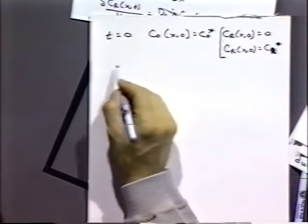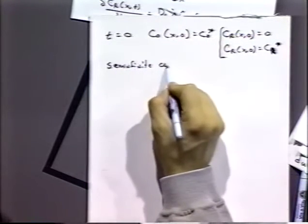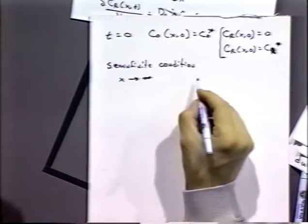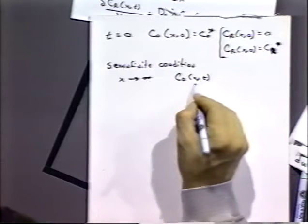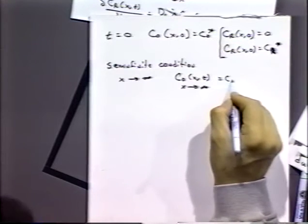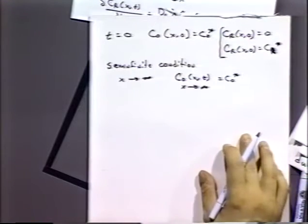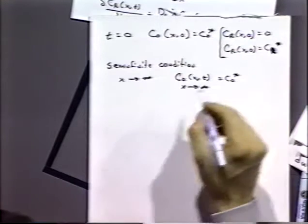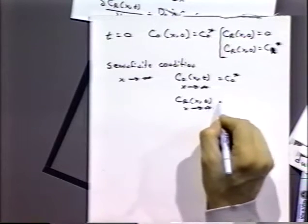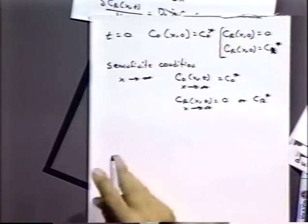We also consider what we call a semi-infinite condition: as X approaches infinity, the concentration of O at all times equals the bulk. In other words, if we go far enough away from the electrode surface, the concentration of O is equal to the bulk. Likewise, C_R as X approaches infinity equals zero, or alternatively equals C_R bulk.